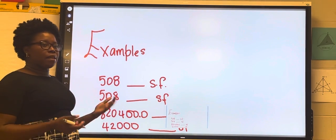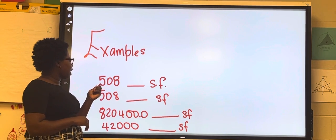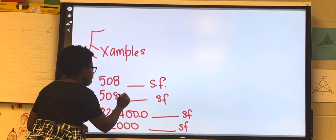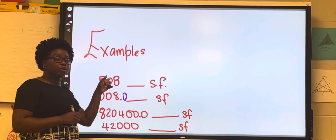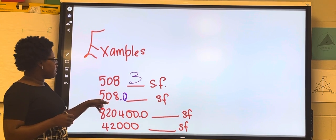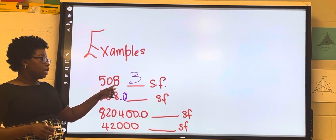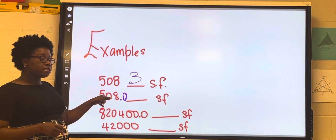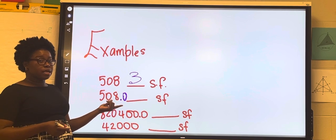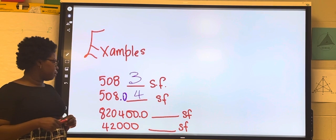Now let's look at some examples to identify the number of significant figures. For 508, we see there is an in-between zero, so that zero is significant — this one has three significant figures. For 508.0, we have one, two, three, four significant figures: the zero is in-between and the trailing zero comes after the decimal point, so it is significant. So 508.0 has four significant figures.